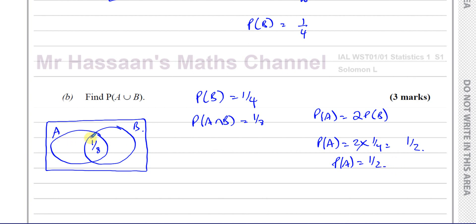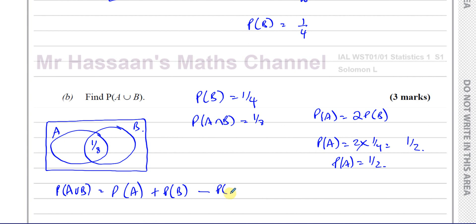We want to find the probability of A union B. The probability of A union B is the probability of all of A — the entire left circle — plus the probability of all of B — the entire right circle — minus the probability of the intersection between A and B. When we counted all of A we counted the intersection once, and when we counted all of B we counted it a second time, so we take it away so it's only counted once.